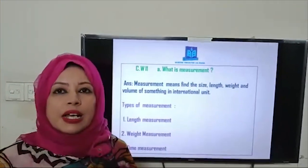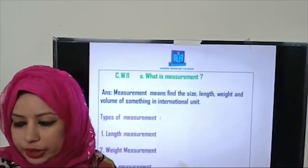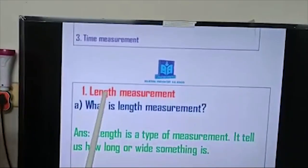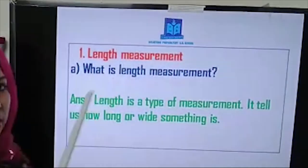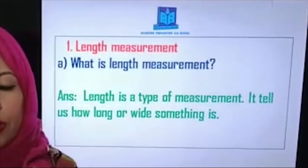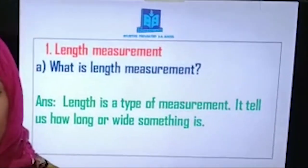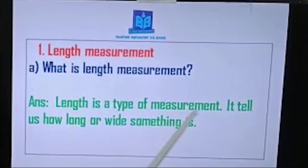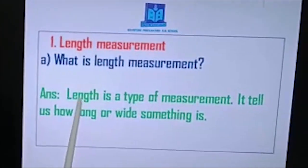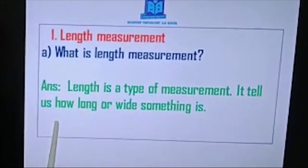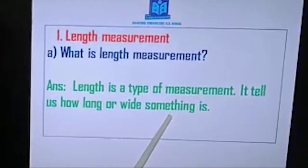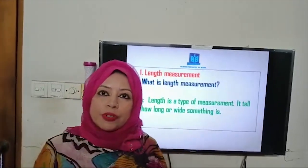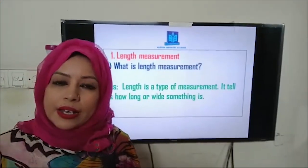Today there is no writing; I will discuss the basic things of measurement. Our first type is length measurement. What is length measurement? Length is a type of measurement — it tells us how long or wide something is. From the definition, length measurement tells us how long or wide something is.